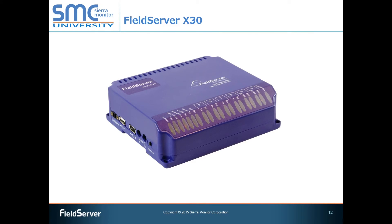Our other platform is the FieldServer X30, which comes standard with two Ethernet ports, two RS-485 ports, two RS-232 ports, and a LonWorks port. Additionally, it is possible to add an option card to this platform in order to support other protocols that use their own chipset design. Examples of these protocols are Profibus, DeviceNet, and ControlNet. The X30 platform supports point counts of 1,000, 5,000, and 10,000 points, and the power supply is included with the unit. You can also purchase the optional DIN rail mount, but a wall mount option is available at no extra cost.